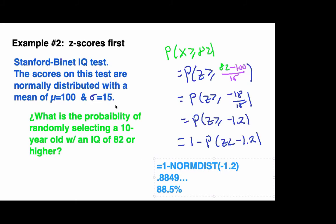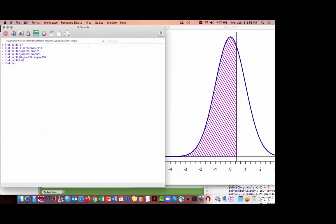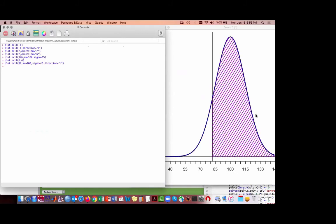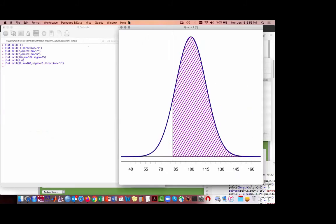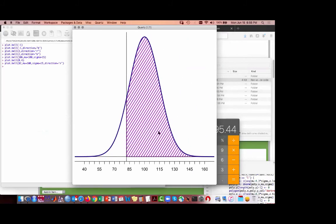And graphically, that would look like this. This is plot.bell. So we're looking at 82 or higher, mu equals 100, sigma equals 15, and the direction is to the right. And that is the graph that we would expect to see. So this total shaded area, so an IQ of 82 or above, there is an 88.5, or about an 89% chance of finding an individual with that IQ or higher.